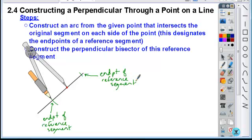And the whole reason for this is now, if I just took this segment, the segment that's designated between those two intersections, those two reference endpoints, all I need to do now is construct the perpendicular bisector of that and it will be perpendicular through that given point.